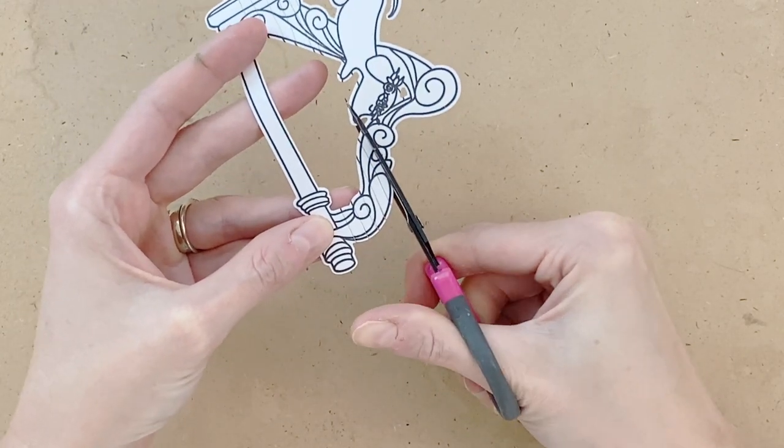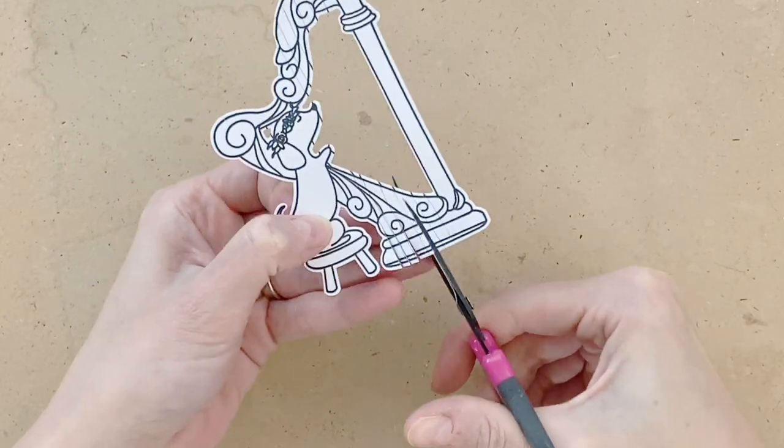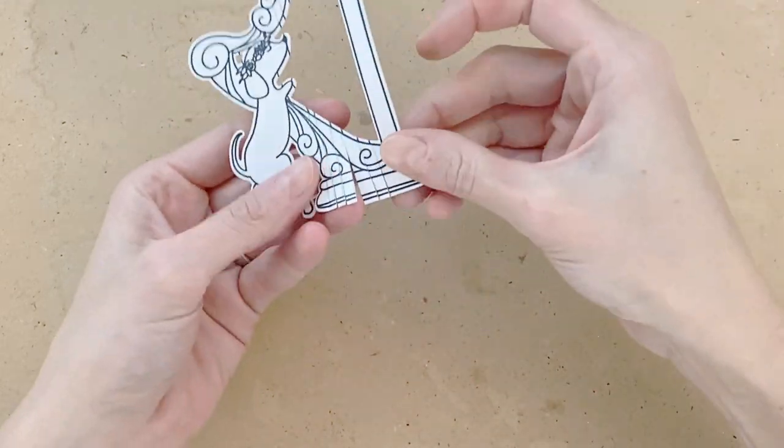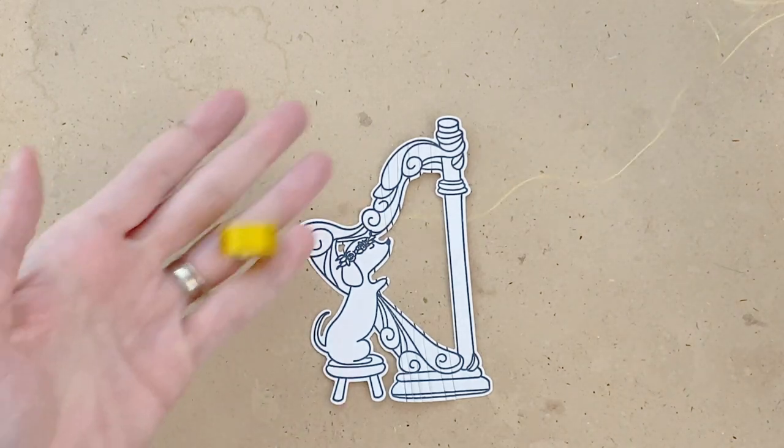I don't want to cut all the way through. I want to stop just about like a quarter inch away from the opening where the strings were for the harp. Once I finish cutting all my little slits I'll then put my harp aside and move on to my string and beads.